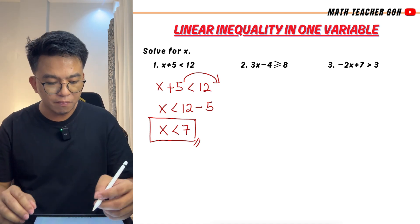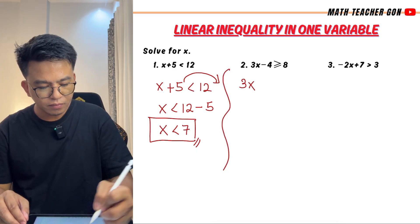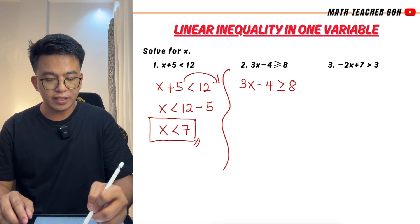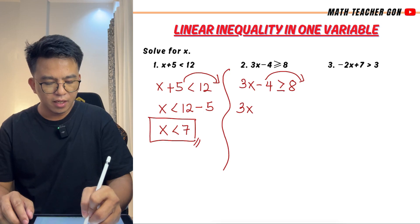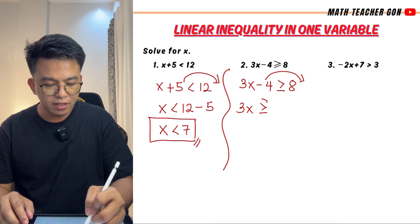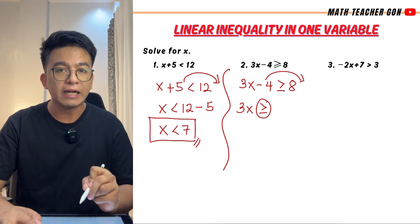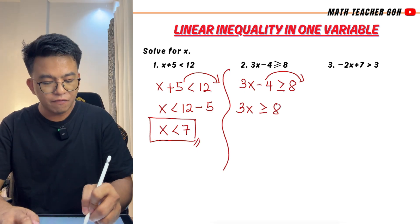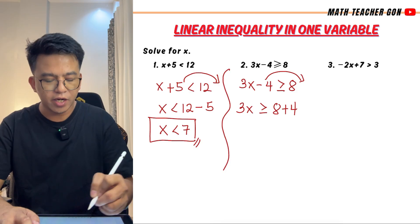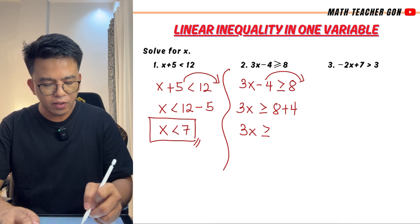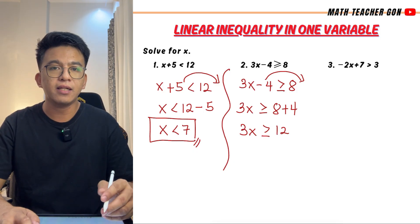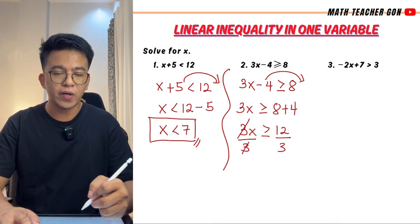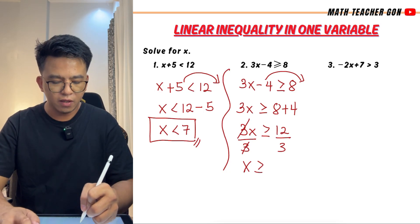Now let's move on with item number two. We have 3x minus 4 is greater than or equal to 8. This symbol is read as greater than or equal. Transpose 4 to the other side: copy 3x, then copy the symbol. 3x is greater than or equal to 8, then from minus 4 that would be plus 4. So 3x is greater than or equal to 8 plus 4, which is 12. Then divide the whole inequality by 3. Cancel, and you have x is greater than or equal to 12 over 3, which is equal to 4.